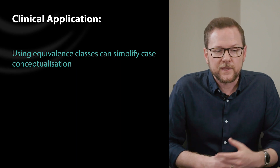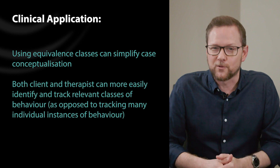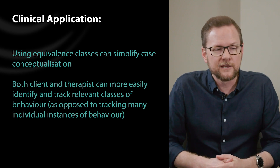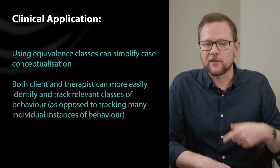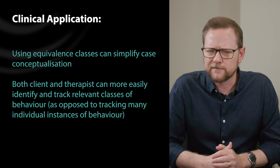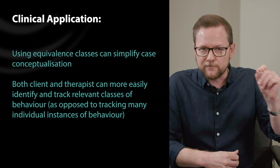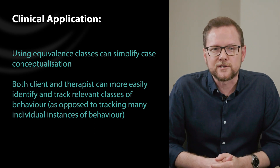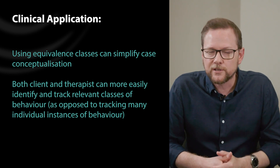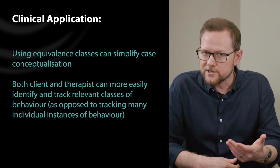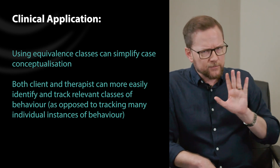Thinking in terms of functional equivalence is useful for a few different reasons. The first reason is that it can simplify the conceptualisation for both the client and the therapist. Once a client can recognise and collaboratively agree on a class of behaviours to work on, grouping them together makes it easier for the client to spot those behaviours — to say, 'that was a moment of avoidance.' It's also a good shorthand for the therapist, who might ask, 'was that a bit of an avoidance move?'